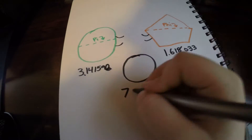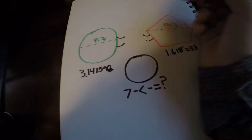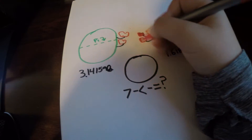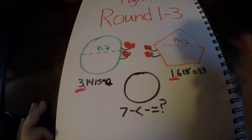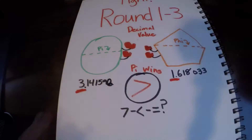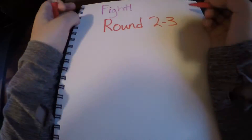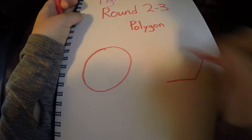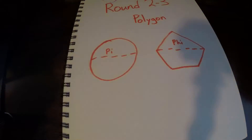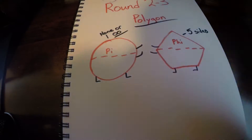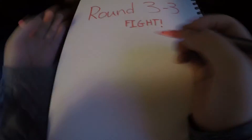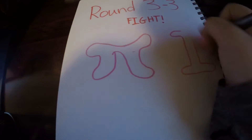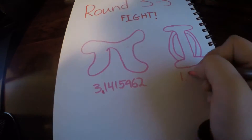Anyways, there are two rounds. One round is going to be its decimal value, and the other round — which you're probably seeing now — is probably going to be something else, I keep forgetting. This is unscripted. Please do not judge me. I'm too lazy.